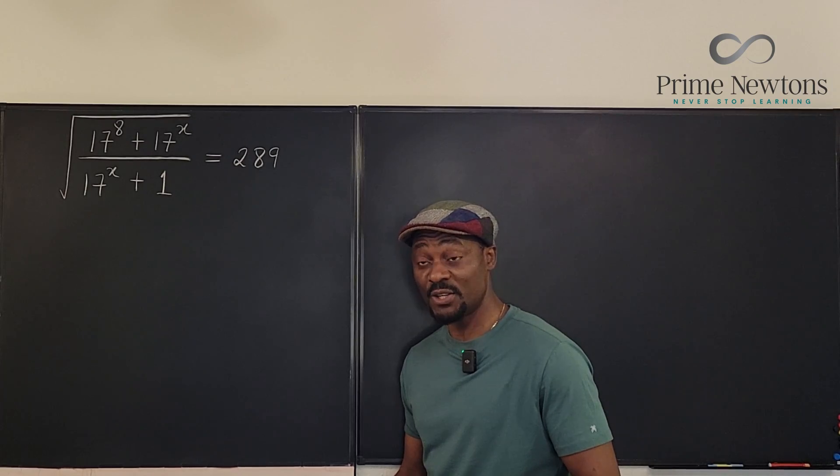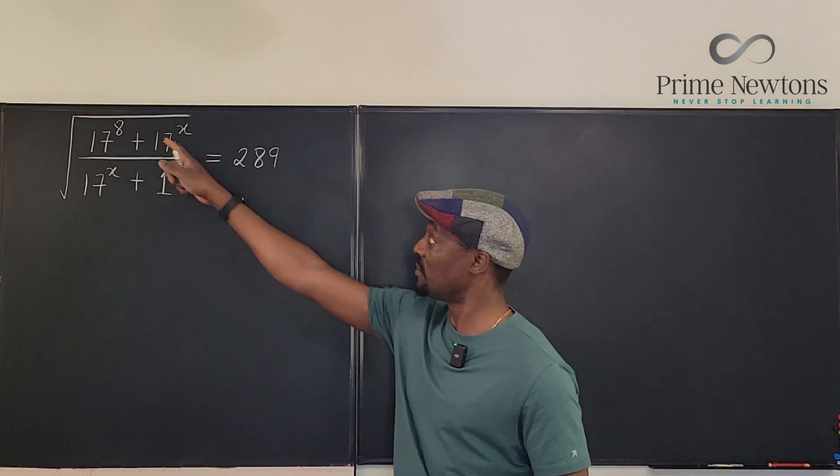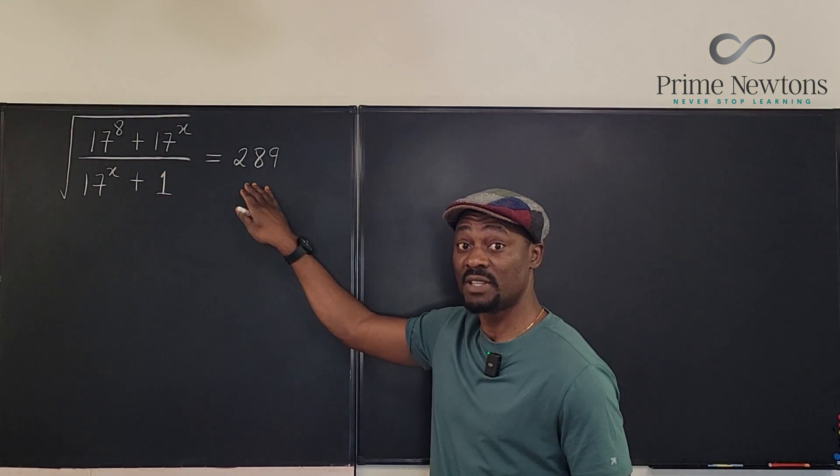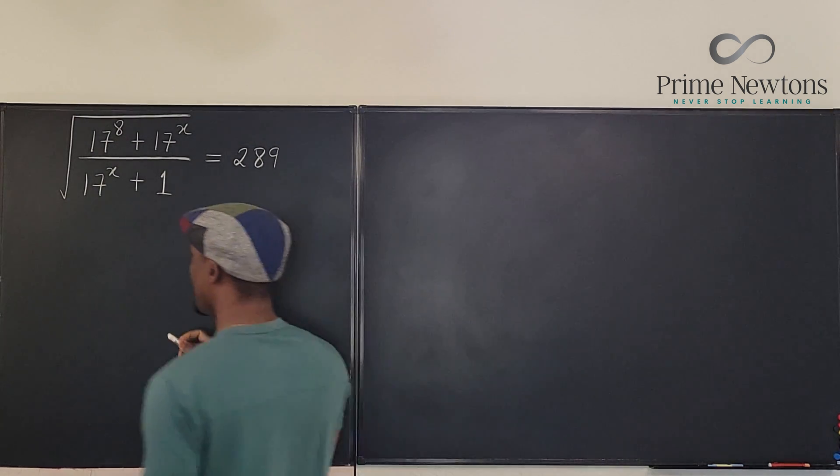The first thing you want to do is get rid of the square root sign. And at the same time, I'll be writing this in terms of 17. So let's rewrite this.